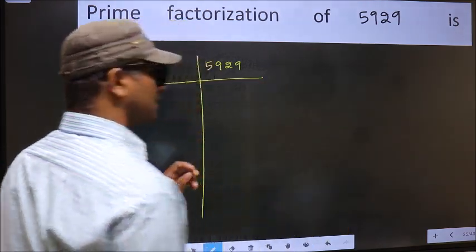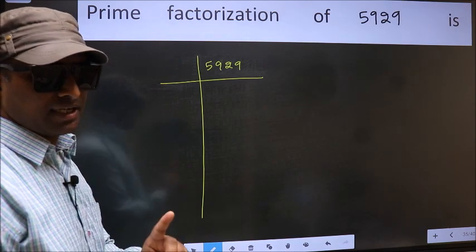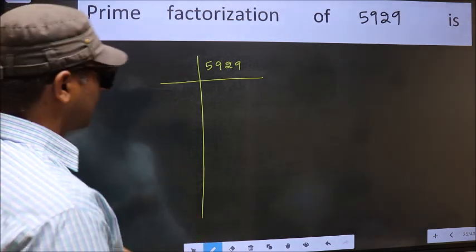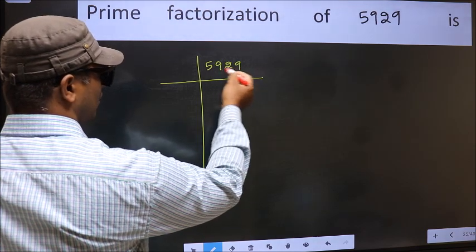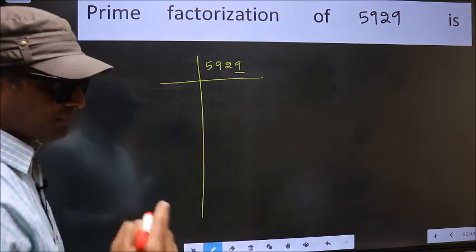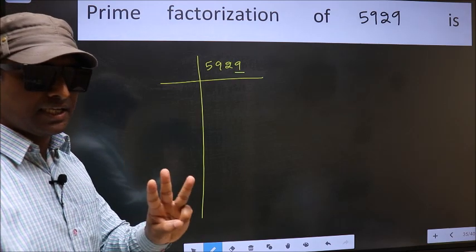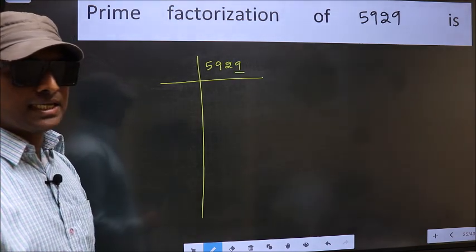This is your step 1. Next, in this number, the last digit is 9, not even, so not divisible by 2. Next Prime Number 3. To check divisibility by 3...